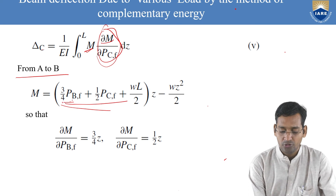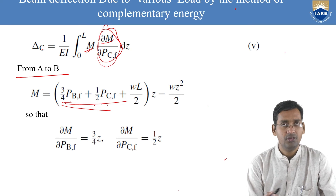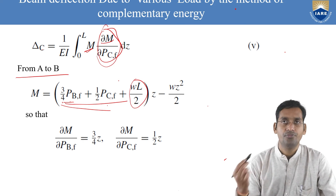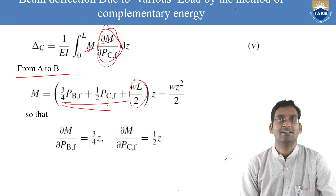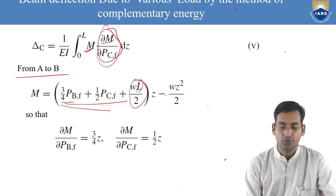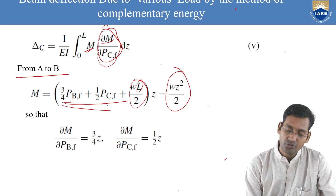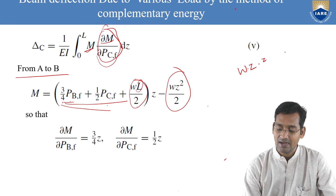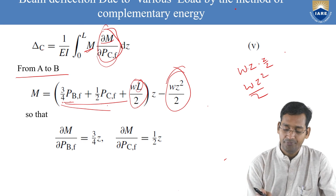Differentiating M with respect to PCF for segment A to B: PCF term is 1/2 PCF × z, so ∂M/∂PCF = z/2. The PBF and UDL terms have no PCF, so they contribute zero. Hence ∂M/∂PCF = z/2 for A to B. The UDL formula gives moment contribution Wz²/2 from a distributed load W acting up to point z, where the resultant Wz acts at z/2.